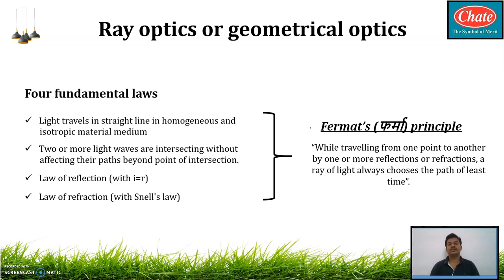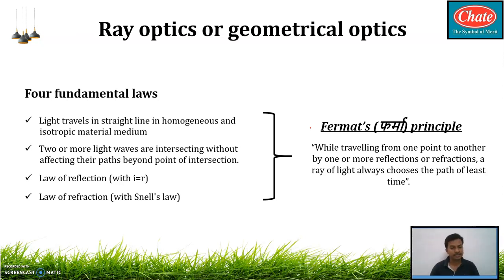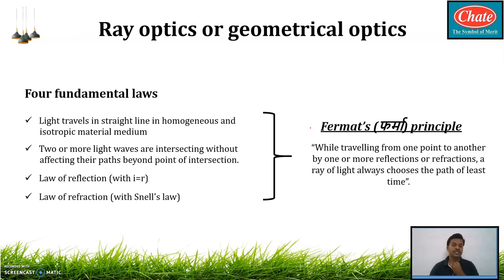In ray optics, there are four fundamental laws according to our textbook. The first law states: light travels in a straight line in a homogeneous and isotropic material medium. This means that in a uniform medium such as air, vacuum, glass, water, or kerosene — light travels in a straight line.